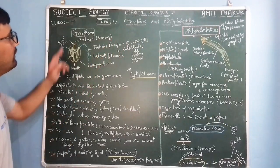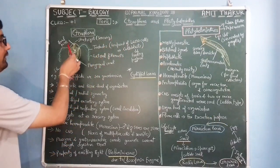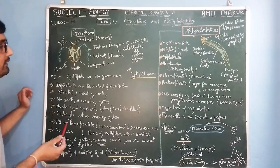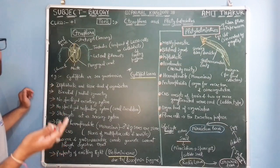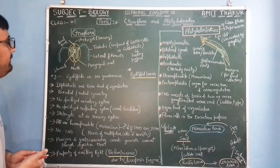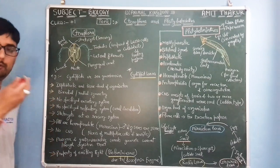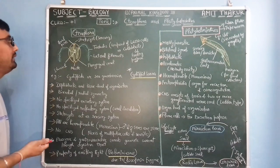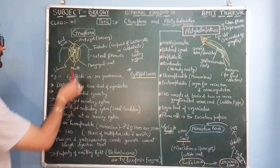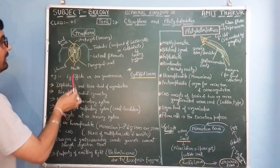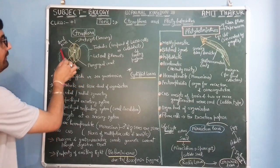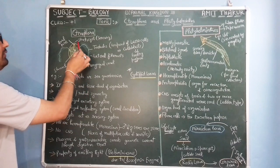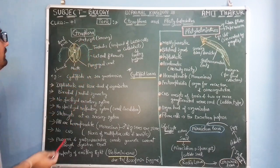So first of all, Ctenophora. You can see the structure of Ctenophora here and they are popularly known as sea gooseberries. They are marine water inhabitants. This is the structure with tentacles and the statocyst at the anterior end which plays a sensory role.